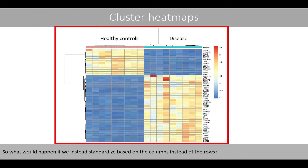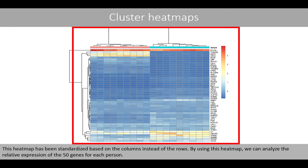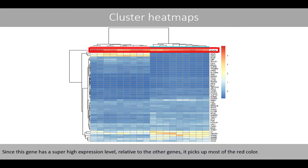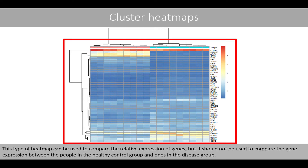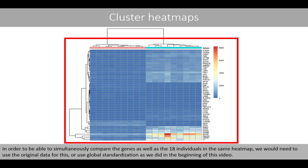What would happen if we instead standardized based on the columns instead of the rows? This heatmap has been standardized based on columns. By using this heatmap, we can analyze the relative expression of the 50 genes for each person. However, since one gene has a super high expression level relative to the others, it picks up most of the red color. This type of heatmap can be used to compare relative expression of genes, but it should not be used to compare gene expression between the healthy control group and the disease group. To simultaneously compare genes and all 18 individuals, we would need to use the original data or global standardization as done earlier.